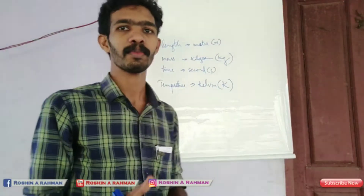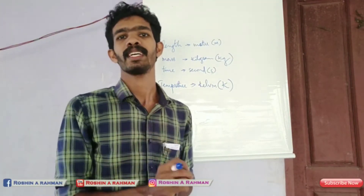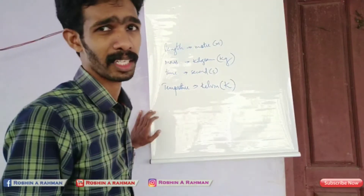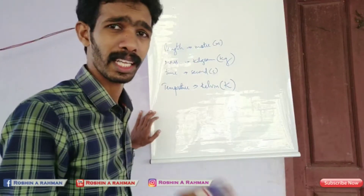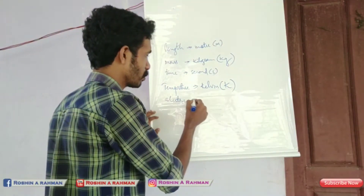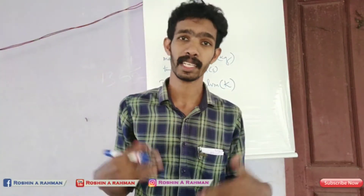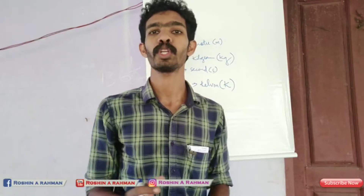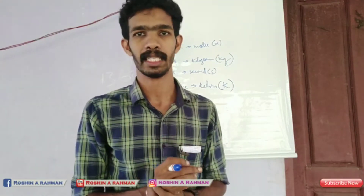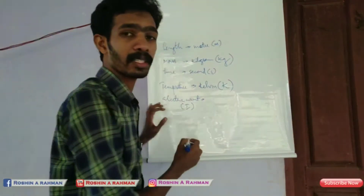Then, if you look at the memory part, Kelvin is for temperature. When you look at electric current, the unit of electric current is Ampere. The symbol for current is I, and I is written on the left. The unit for current is Ampere, denoted as A.